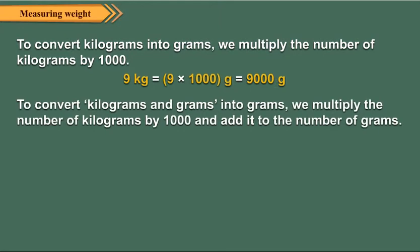Now, to convert kilograms and grams into grams, we multiply the number of kilograms by 1000 and add it to the number of grams. Let us now convert 5 kilograms 675 grams into grams.